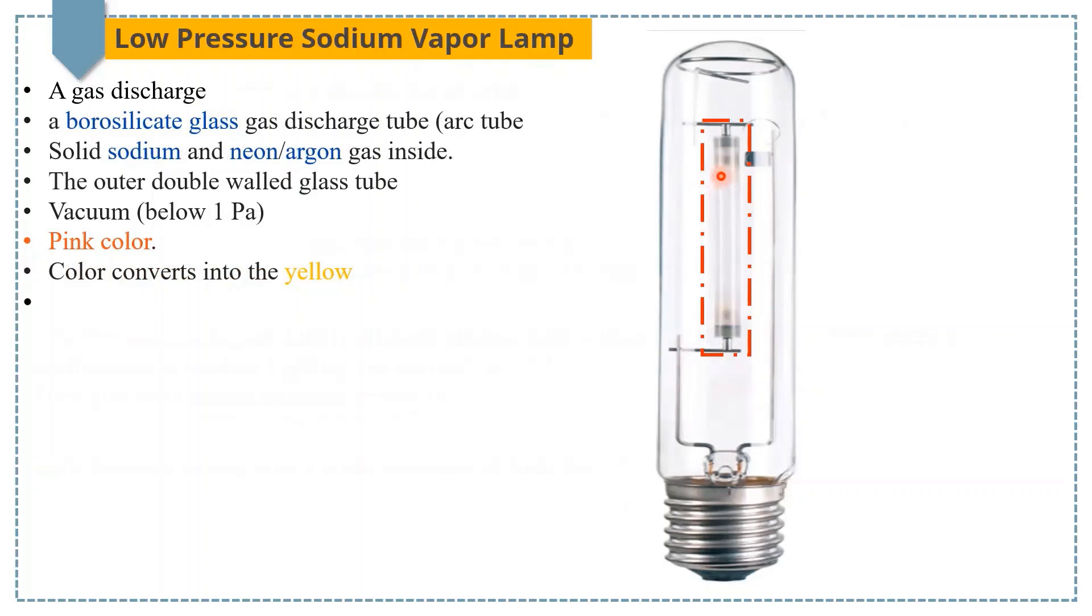Low pressure sodium vapor lamp is made in the form of cylindrical shape or U-shaped glass tube with several centimeters length. It consists of borosilicate glass discharge tube connected with two electrodes and it contains solid sodium and small amount of neon or argon gas inside the tube.